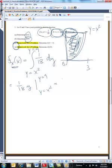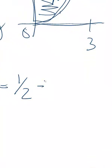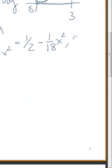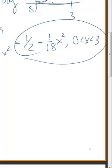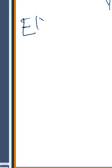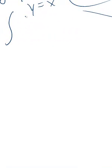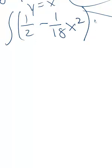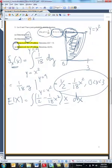This works out to (1/2) minus (1/18)x squared, and this is valid for x's from 0 to 3. So the expected value of x should be the integral of [(1/2) minus (1/18)x squared] times x dx, which is f(x) times x — the formula for expected value of x — integrated from 0 to 3 over the support of x.